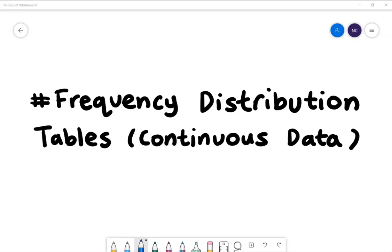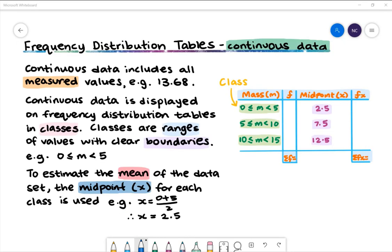Hi there, today we're going to be looking at frequency distribution tables and continuous data. Continuous data includes all measured values, for example 13.68.